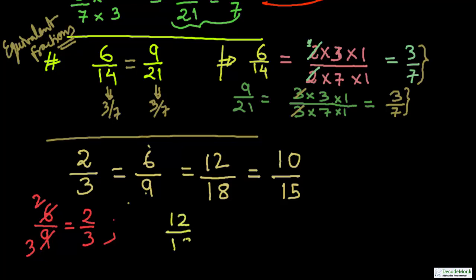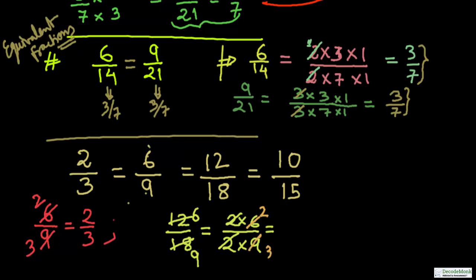Doing the same thing for 12 upon 18: both numbers are even, so both are divisible by 2. 2 sixes are 12 and 2 nines are 18, so cancelling the 2s gives 6 upon 9. Then 6 and 9 both come in the table of 3: 3 twos are 6 and 3 threes are 9. Cancelling the 3s reduces it to 2 upon 3. So 12 upon 18 is also equal to 2 upon 3.